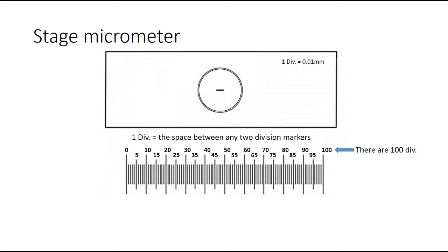This stage micrometer has been calibrated. It states in the upper right-hand corner that one division is equal to 0.01 millimeters in length — that's pretty small. So the space between any two given division markers on this ruler equals 0.01 millimeters. I usually find it easier to convert millimeters into micrometers: 0.01 millimeters is the same as saying one division equals 10 micrometers. Throughout my video I'm going to refer to one division being equal to 10 micrometers in length.